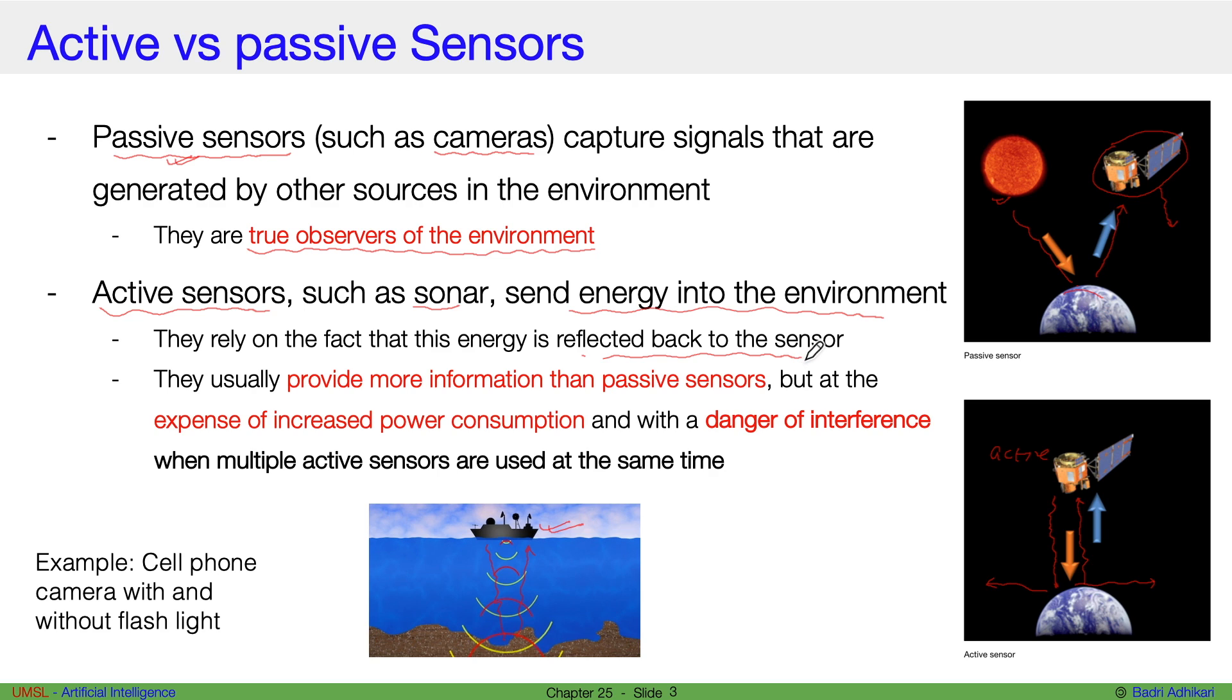Usually, active sensors provide more information than passive sensors because they can control the amount of energy they send and read and so on. But this comes with the expense of increased power consumption.